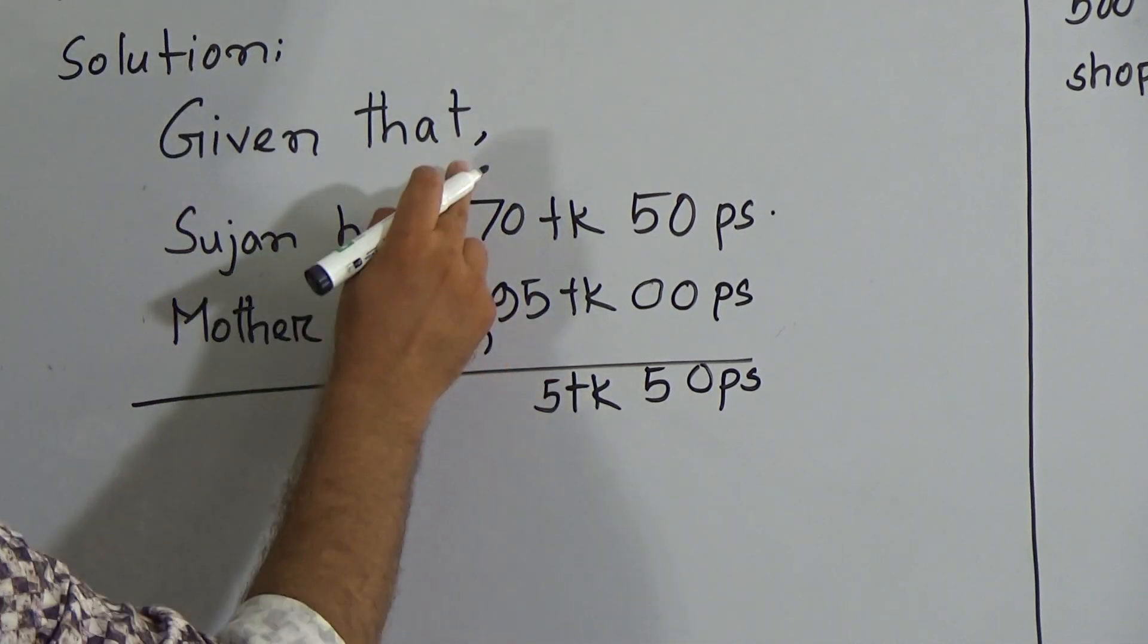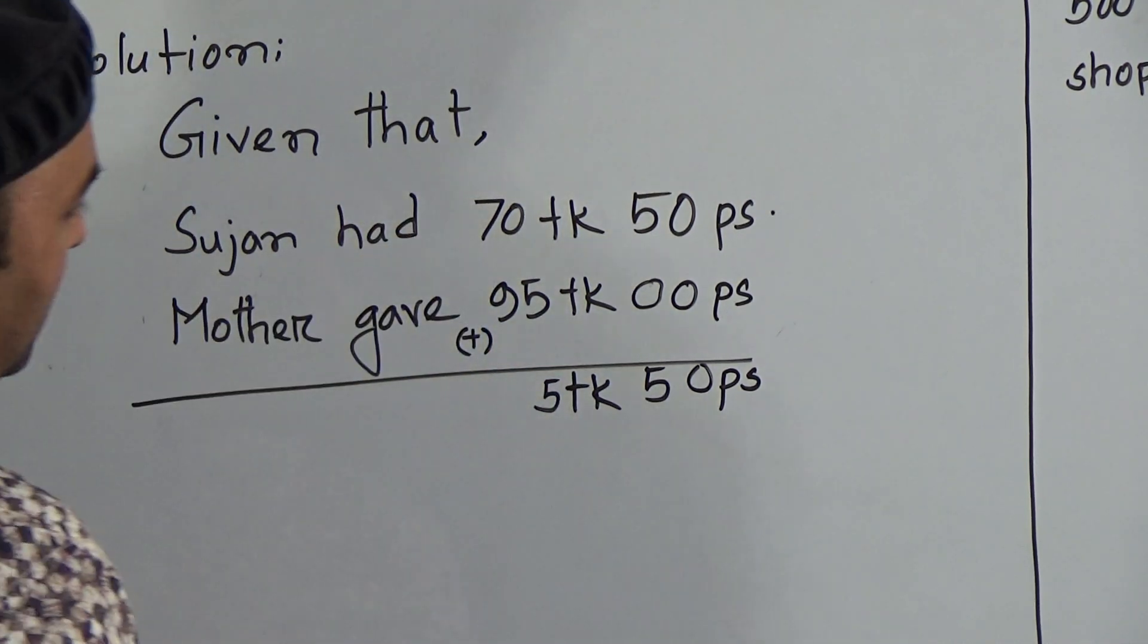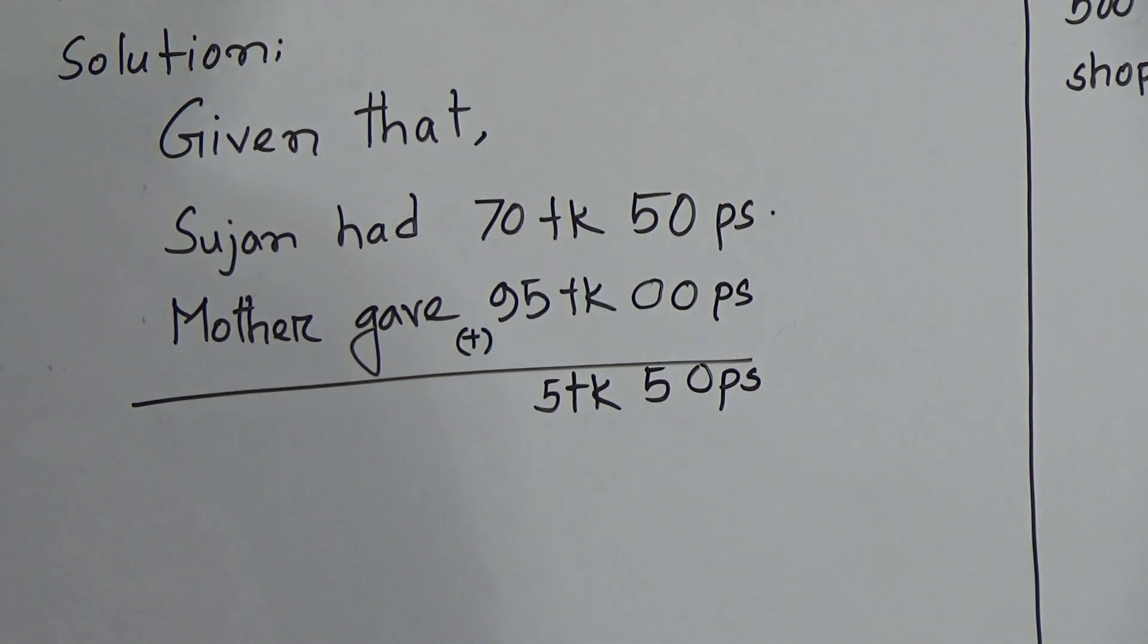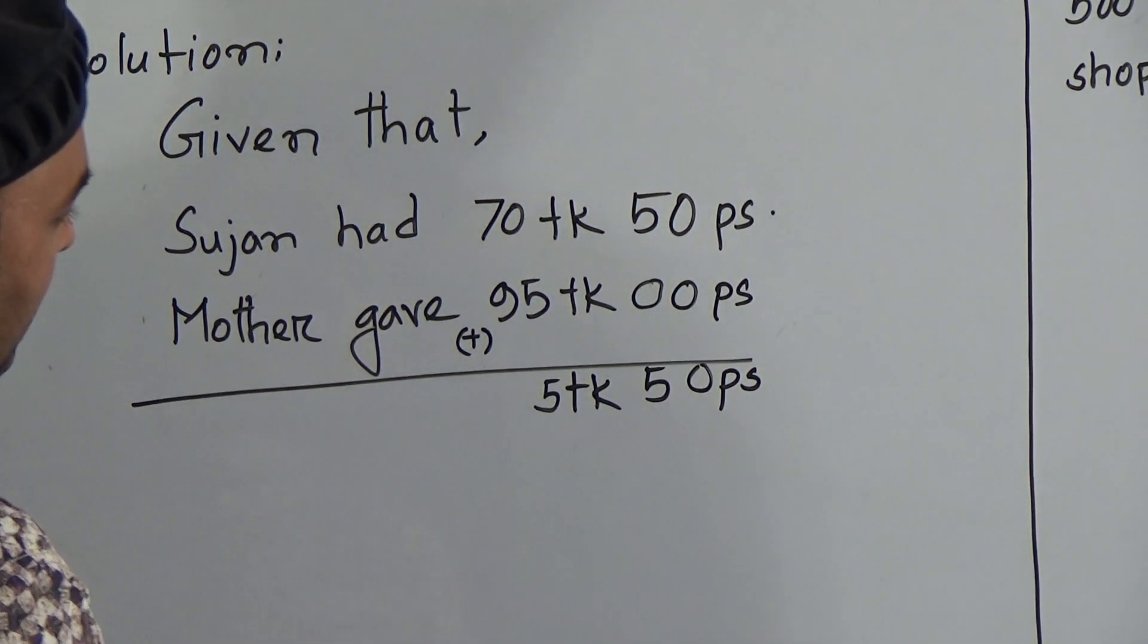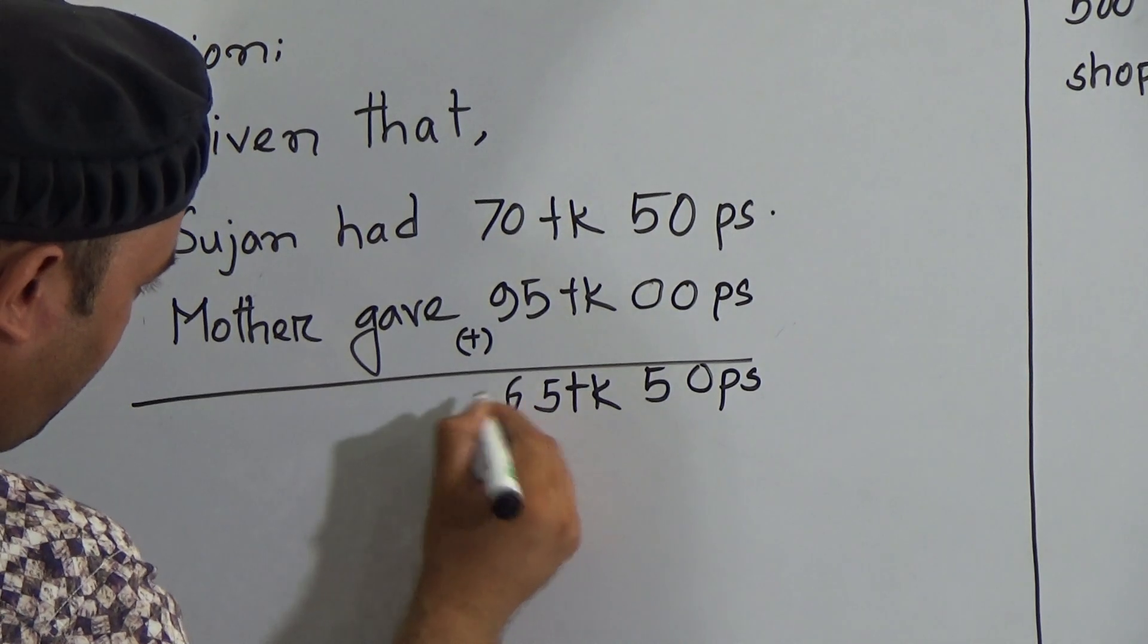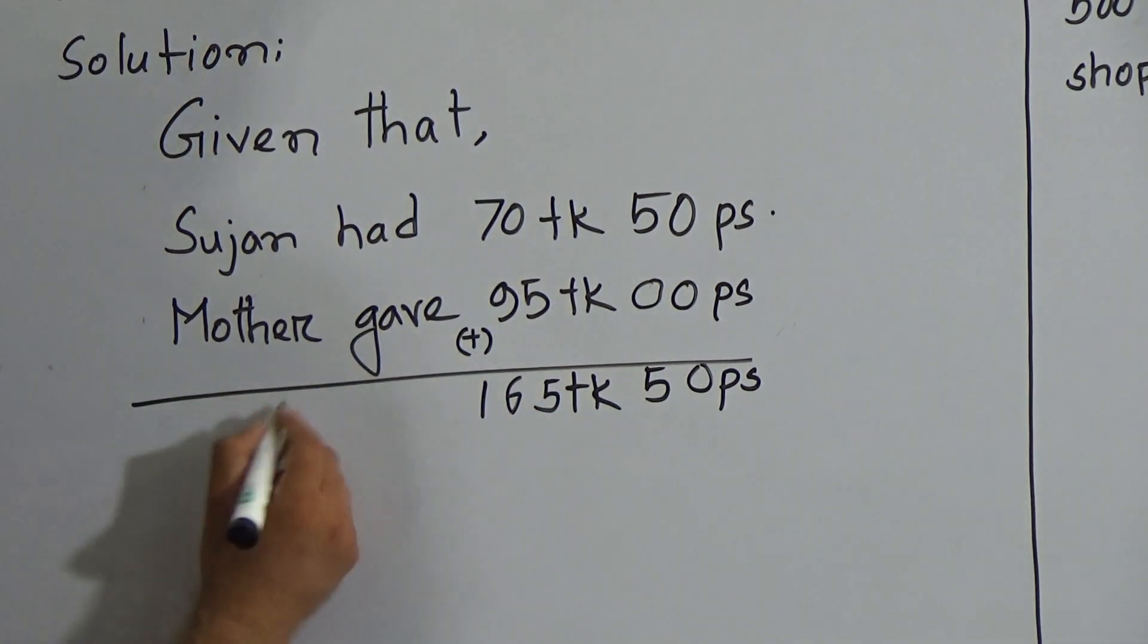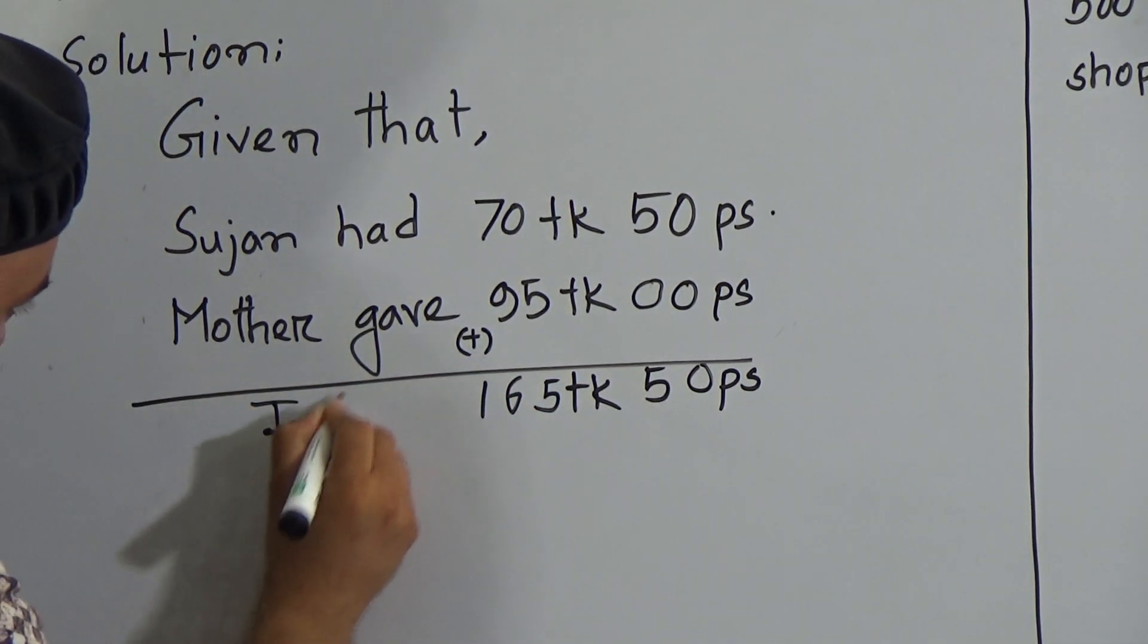How much taka here? 5 plus 0 is 5, 9 plus 0 is 9, plus 0 is 10, 11, 12, 13, 14, 15, 16, so here is 16.